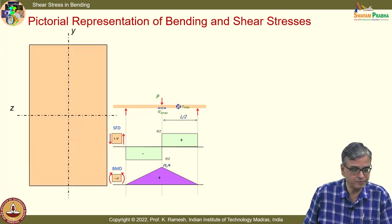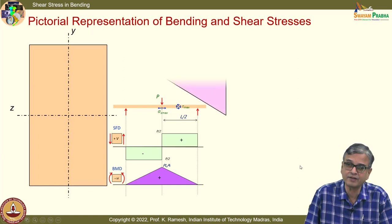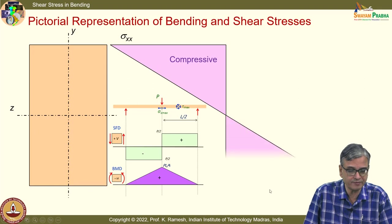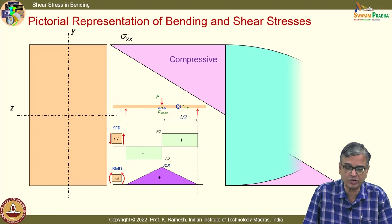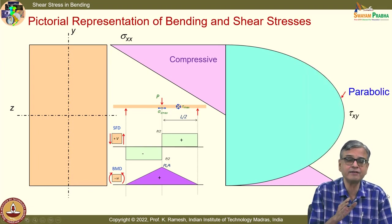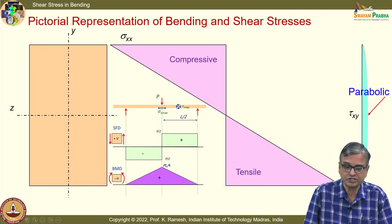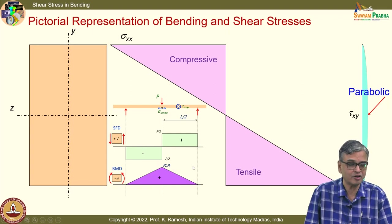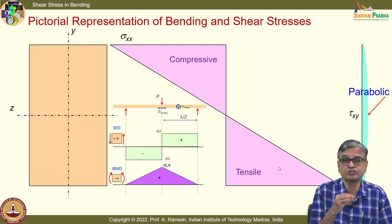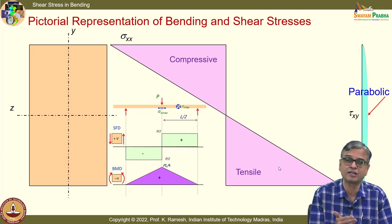Even though shear is important, the bending stress plotted to scale is triangular — compressive on one side, tensile on the other. To illustrate that shear stress varies parabolically, many books draw it big but do not give insight into relative magnitude. Even for a simple rectangular cross section subjected to three-point bending, if you calculate the shear stress and plot it in actual magnitude, it is very small compared to the normal stress created by bending. That is why, even though shear is important in certain instances, we neglect it because its actual magnitudes are considerably smaller in many applications.